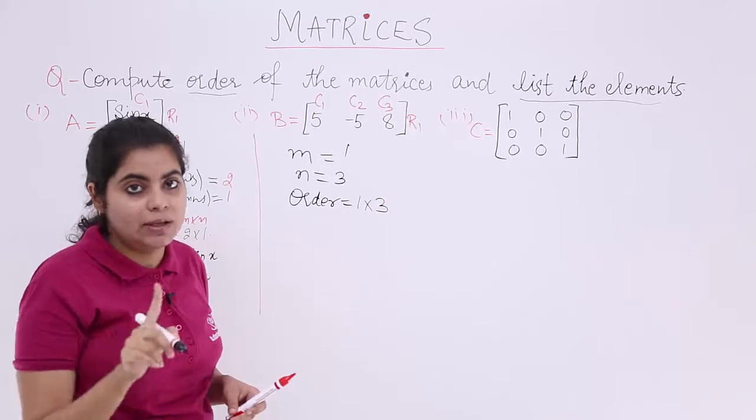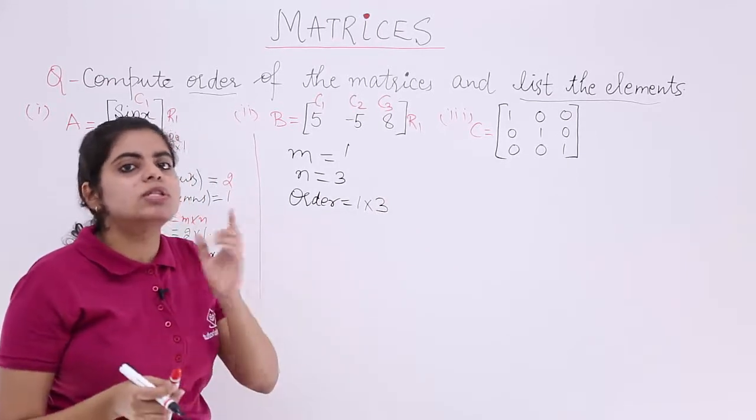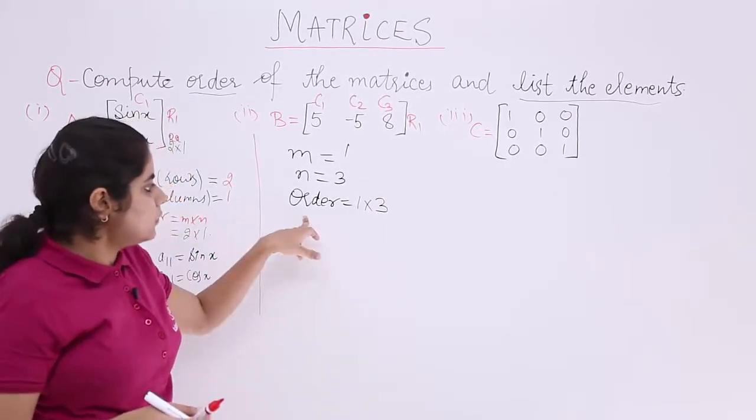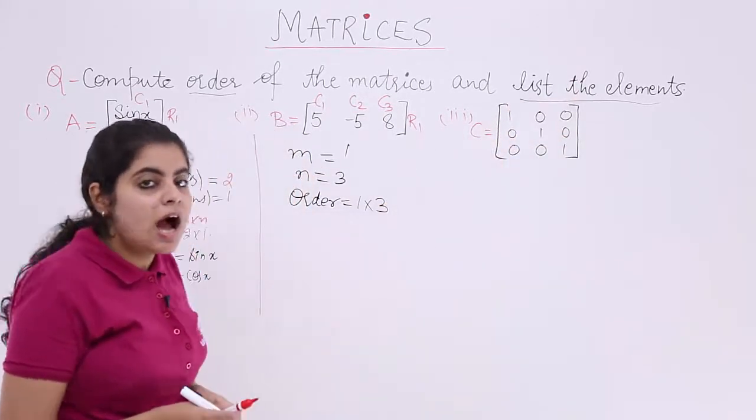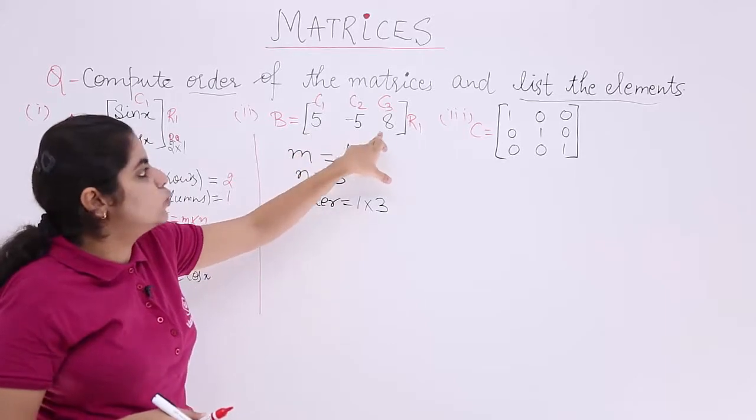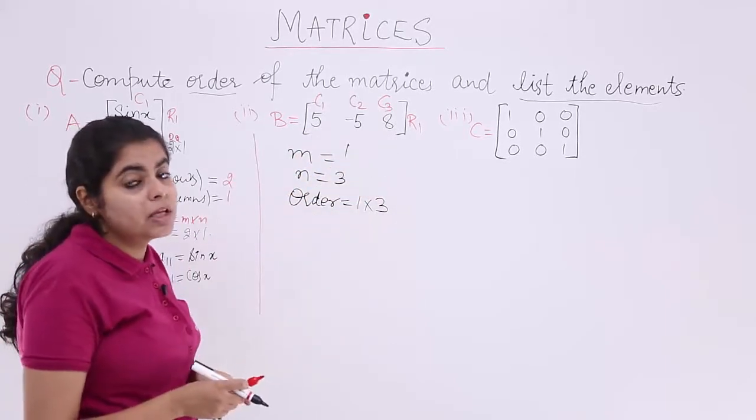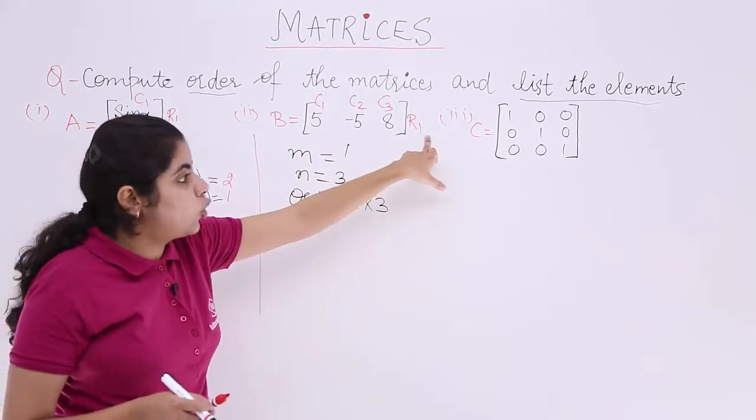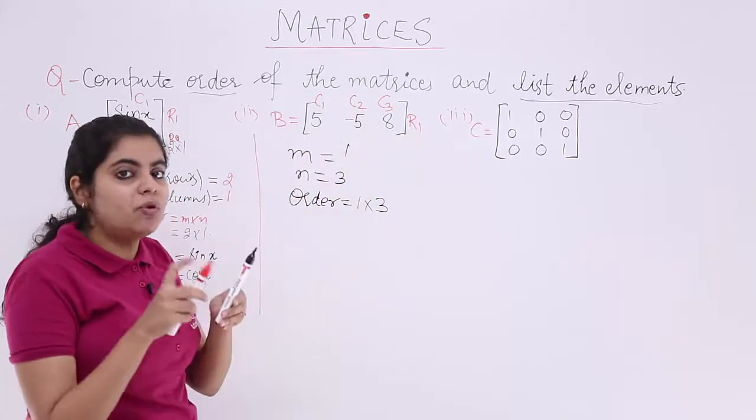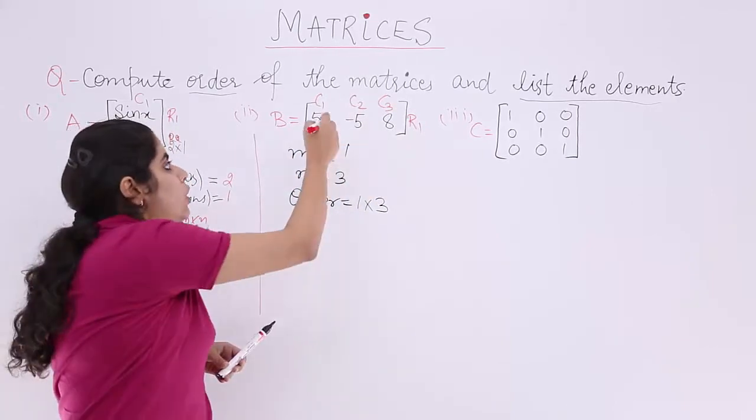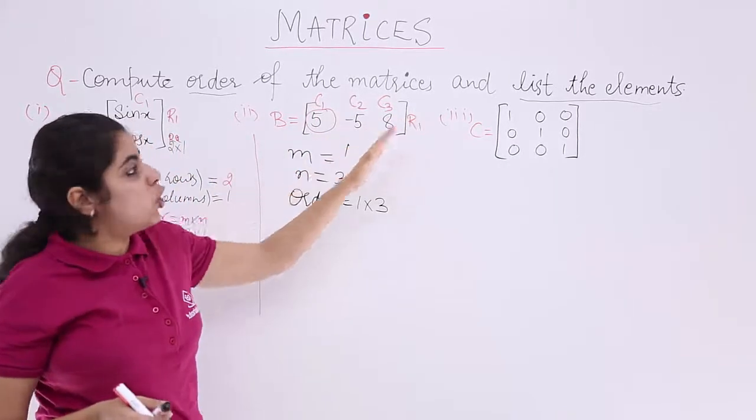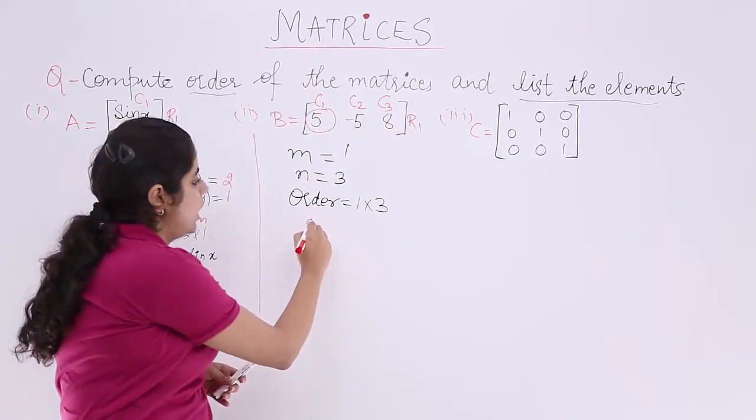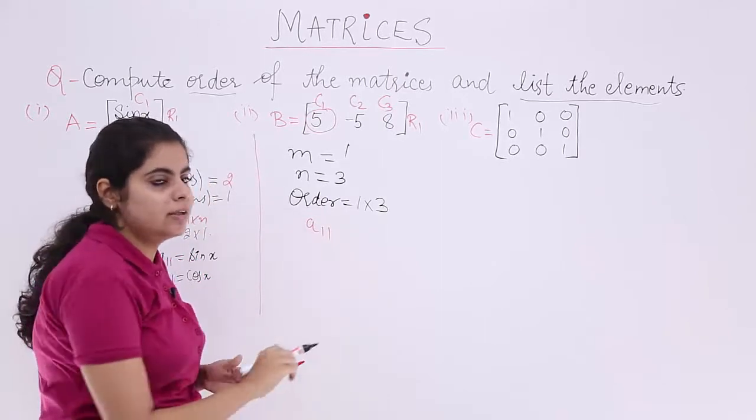Not 3 by 1. 3 by 1 means 3 rows, 1 column. Order is denoted. Next task was to list the elements. How many elements are there? 1, 2, 3. How to name them? First row, first column. What is the value here? It is 5. How is 5 obtained? Intersection of first row, first column. So A11 is 5.